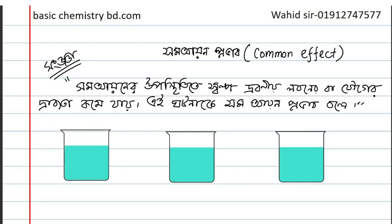One is silver chloride. Its KSP is 1.5 into 10 to the power minus 10. And one is 100% pure water.